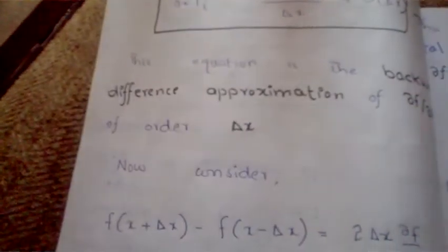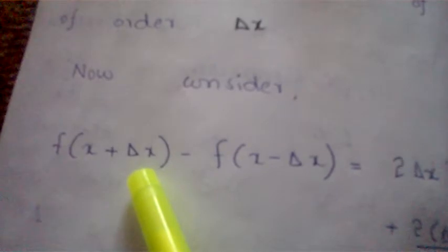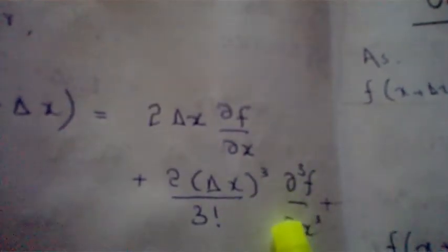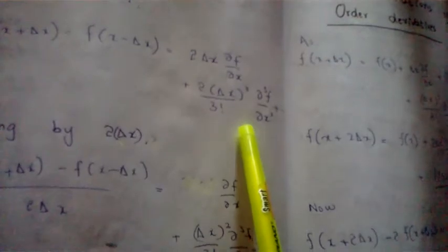Similarly, we can find the Central Difference Approximation. We have already found expressions for both f(x + Δx) and f(x − Δx). Now we simply subtract f(x − Δx) from f(x + Δx), which gives: 2Δx · (∂f/∂x) + (2/3!) · Δx³ · (∂³f/∂x³) + … We then isolate ∂f/∂x, giving: ∂f/∂x + higher-order terms = [f(x + Δx) − f(x − Δx)] / (2Δx).